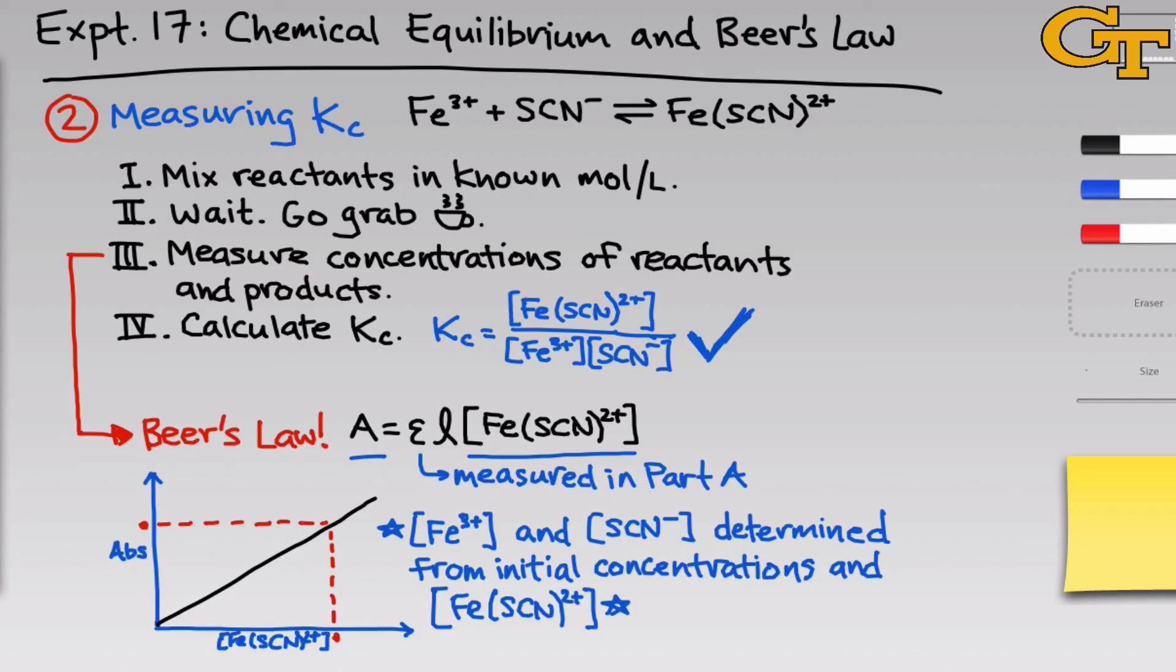The idea there is to use the stoichiometry of the reaction and appreciate the fact that the only thing consuming iron and thiocyanate is the formation of the complex. So for every molecule of complex that we have, one molecule of Fe3+ and one molecule of SCN- has been taken away. With the equilibrium concentrations of the product, Fe3+ and SCN- in hand, we can just plug back into the Kc expression that you see in the middle of the slide here to determine the value of Kc. We'll do this with several different starting concentrations to illustrate that the value of Kc that we calculate in each case is approximately the same, even though we're varying the starting concentrations of Fe3+ and SCN-.